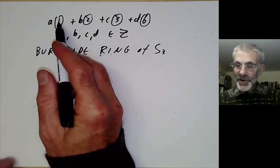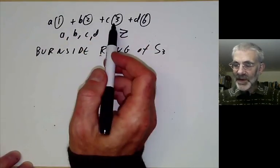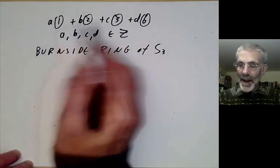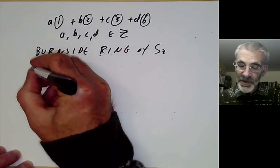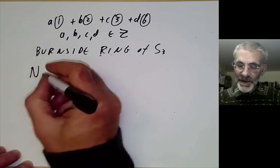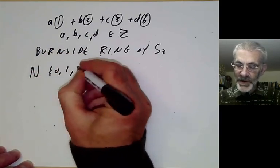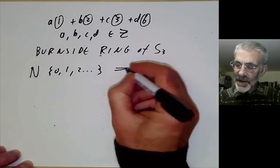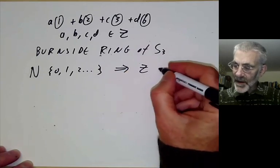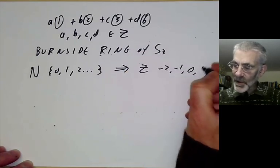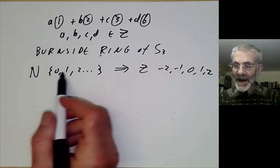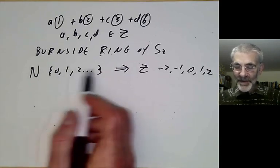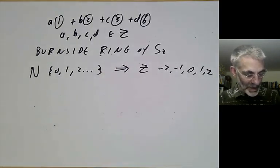Notice this operation of going from this thing that isn't quite a ring to a ring by forcibly introducing negative elements is like the construction where you start with positive integers 0, 1, 2 and go to the integers -2, -1, 0, 1, 2. There's a construction where you forcibly add the negative of elements in order to get a ring.